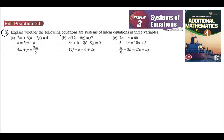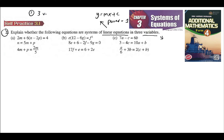To explain whether the following equations are a system of linear equations — a linear equation means Y is equal to MX plus C, which means the power of the variable is equal to one. In three variables, that means you have three variables, and the maximum power of any variable is equal to one.